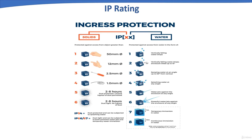The first number indicates protection against intrusion of solid foreign objects, and the second numeral indicates the degree of protection against moisture ingress. For example, an IP rating of IP67 means: the first numeral 6 indicates the object can withstand dust ingress for 2 to 8 hours and is dust-tight. The second numeral 7 means the object can be temporarily immersed in water up to 1 minute and remain protected.